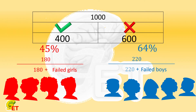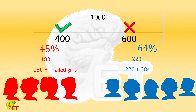64% of the failed children were boys. So failed boys equals 600 times 64%, which equals 384. Then failed girls equals 600 minus 384, which equals 216.